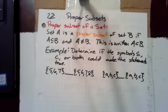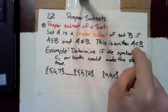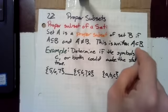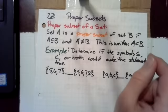In this section, we'll look at proper subsets. Set A is a proper subset of set B if A is a subset of B and A is not equal to B. This is written with this little half-circle symbol. A is a proper subset of B.